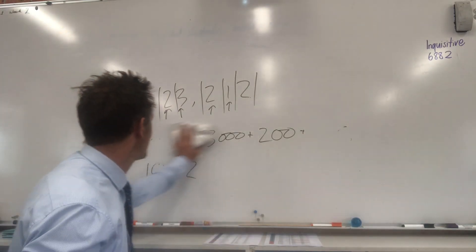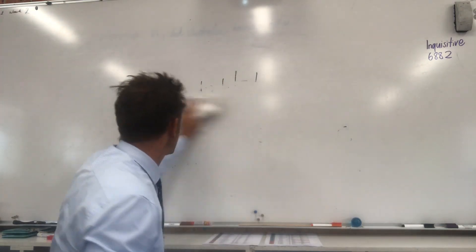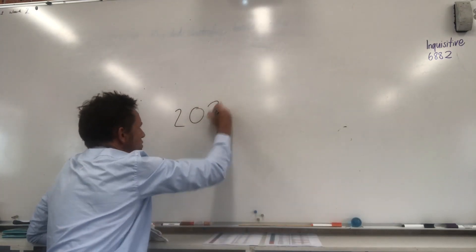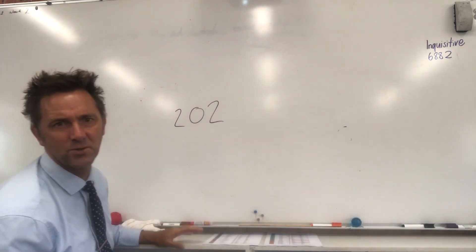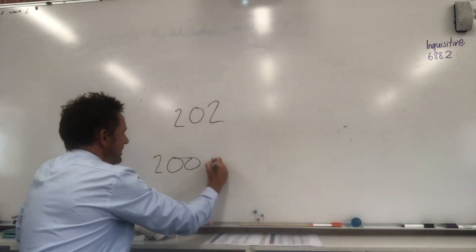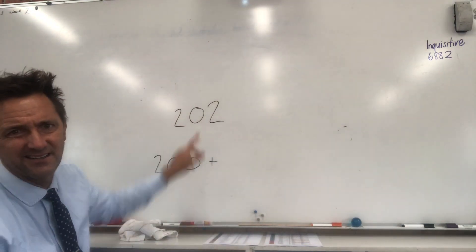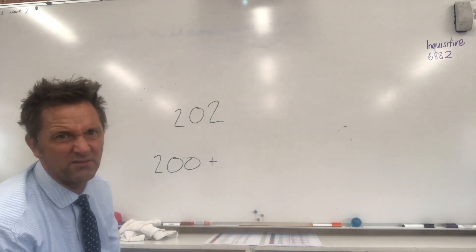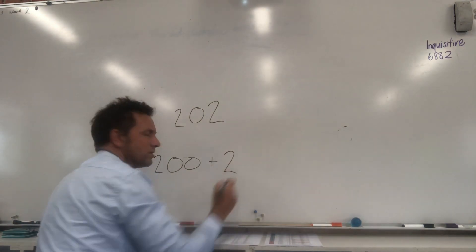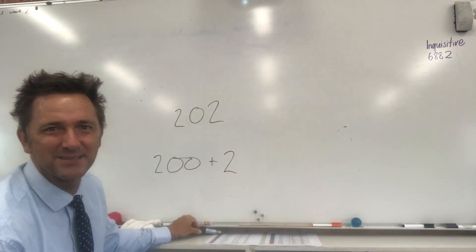Hey, there's one thing that might confuse you. I'll just show you that before you go away. What if you had to expand 202? Well, then you go 200 plus, well, there's nothing there, is there? So it's just nothing. So 200 plus nothing, we leave that out, plus 2. That's expanded numbers.